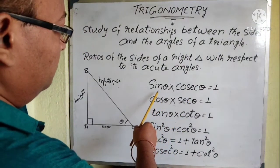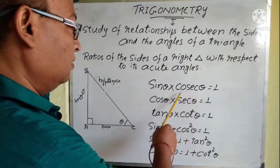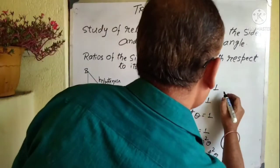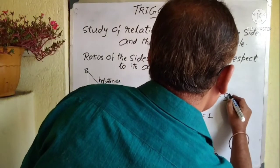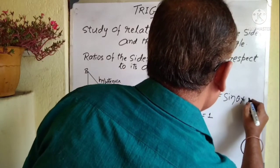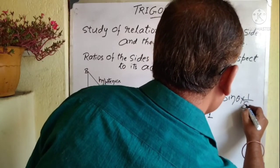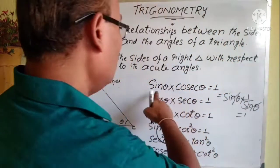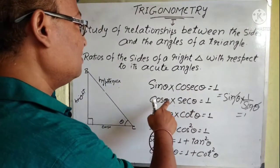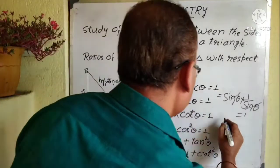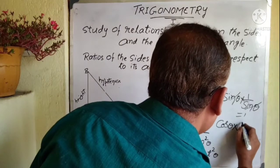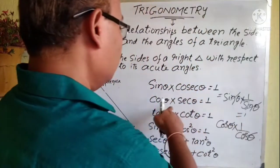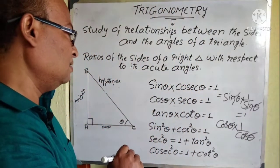Sin theta into cosec theta is equal to 1. How? Cosec theta is 1 by sin theta, so sin theta multiplied by 1 by sin theta — sin theta gets cancelled — equals 1. Similarly, cos theta into sec theta is equal to 1, because sec theta is 1 by cos theta, so cos theta gets cancelled, giving 1.